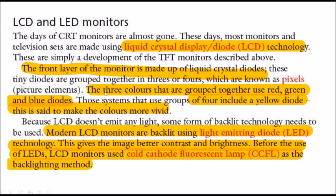The three colors are grouped into red, green, and blue diodes, as we saw in CRT. Sometimes they include a fourth group — yellow diodes — which is said to make the colors more vivid, making the display more clear when the LCD uses groups of four.